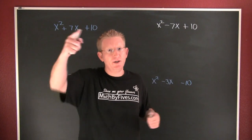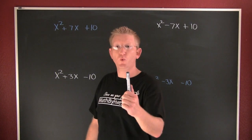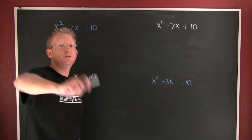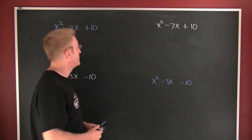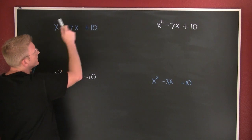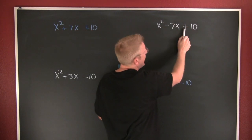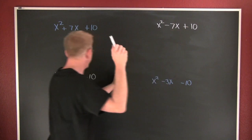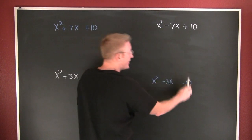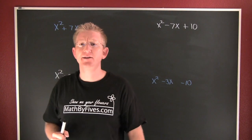Alright, here's how we factor a trinomial whose leading coefficient is one. I have four examples that are going to smooth out this factorization. Here's how the story goes: we're looking for the factors of 10 that add to be 7, and here we're looking for the factors of 10 that subtract to be 3. In all of these examples I need to find the factors of 10.